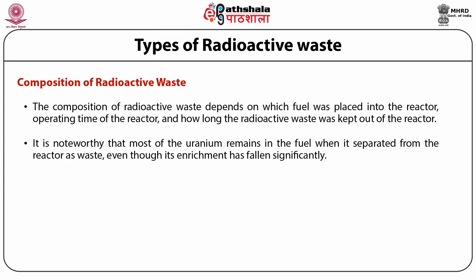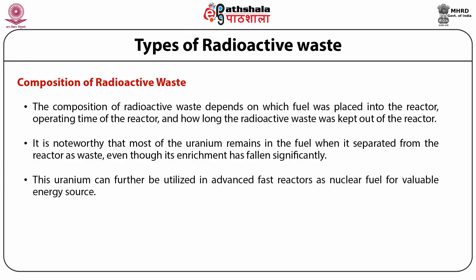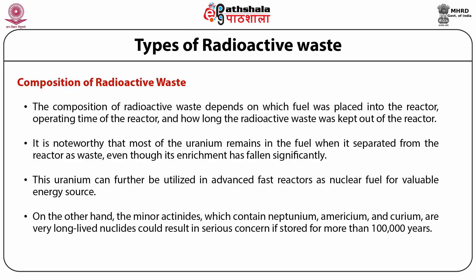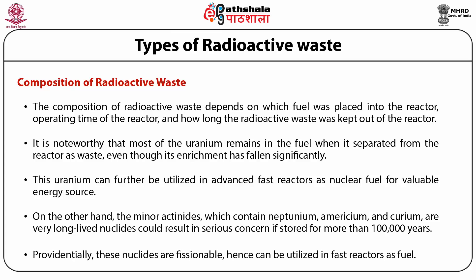The composition of radioactive waste depends on which fuel was placed into the reactor, operating time of the reactor, and how long the waste was kept out of the reactor. Most of the uranium remains in the fuel when separated from the reactor as waste, even though its enrichment has fallen significantly; this uranium can be utilized in advanced fast reactors as nuclear fuel. The minor actinides — neptunium, americium, and curium — are very long-lived nuclides that could result in serious concern if stored for more than 100,000 years; providentially, these nuclides are fissionable and can be utilized in fast reactors as fuel.